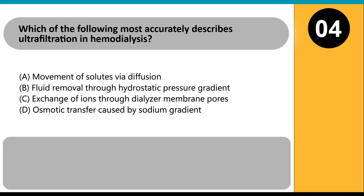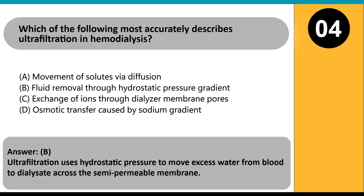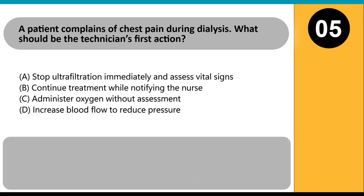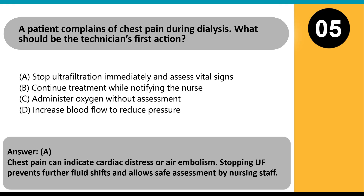Which of the following most accurately describes ultrafiltration in hemodialysis? A. Movement of solutes via diffusion. B. Fluid removal through hydrostatic pressure gradient. C. Exchange of ions through dialyzer membrane pores. D. Osmotic transfer caused by sodium gradient. Answer B. Ultrafiltration uses hydrostatic pressure to move excess water from blood to dialysate across the semipermeable membrane. A patient complains of chest pain during dialysis. What should be the technician's first action? A. Stop ultrafiltration immediately and assess vital signs. B. Continue treatment while notifying the nurse. C. Administer oxygen without assessment. D. Increase blood flow to reduce pressure. Answer A. Chest pain can indicate cardiac distress or air embolism.